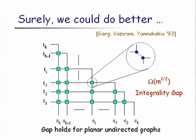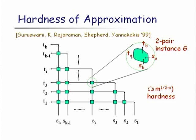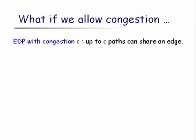The news is worse for directed graphs: this integrality gap can be turned into a hardness of approximation result. The two-pair problem on directed graphs is NP-hard. The green blobs can be replaced by a two-pair gadget — if the gadget admits a solution, all SITI pairs can be routed; if not, it serves as an obstruction and you cannot route more than one pair. This intractability motivates the question: can we relax the problem slightly and get stronger approximation guarantees? A natural relaxation is to consider EDP with congestion.